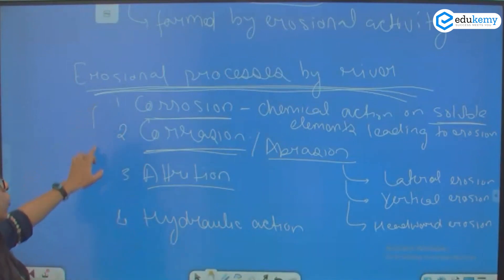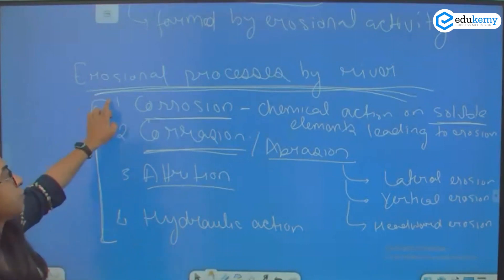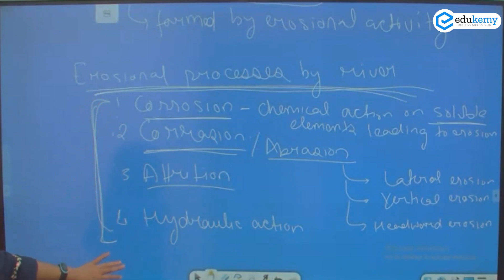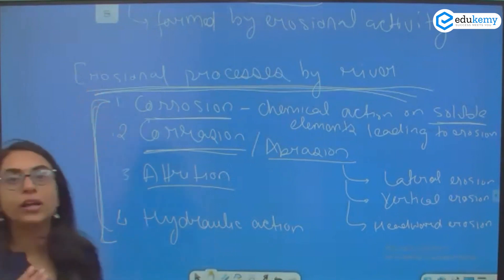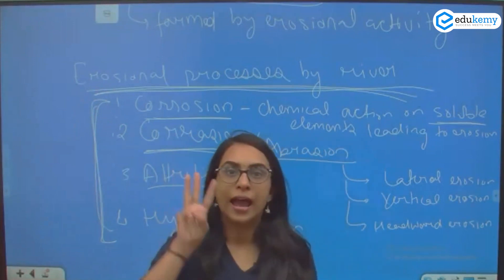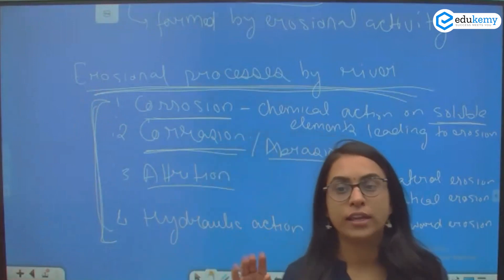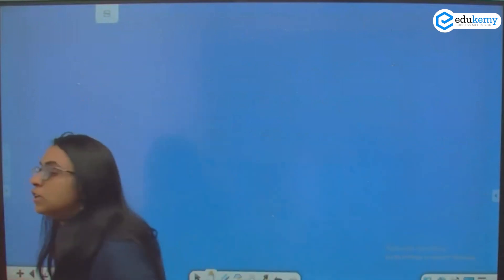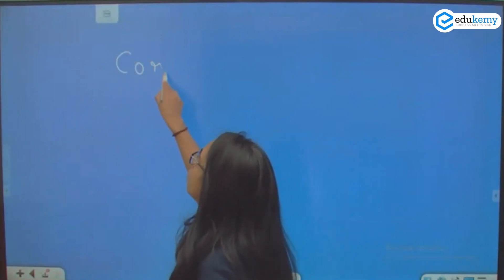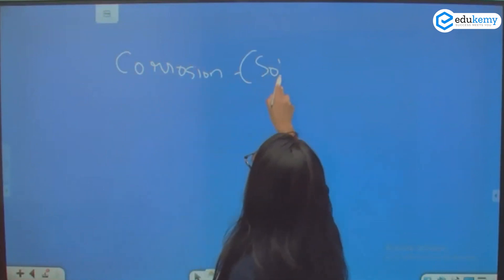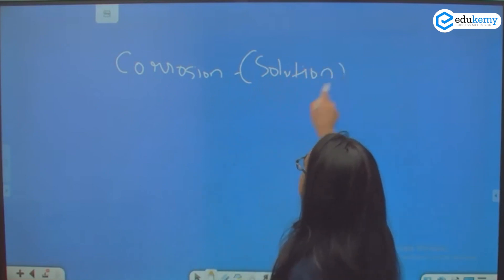These are the erosional processes by the river. We will see each one of them now. The four erosional processes by the river are corrosion, corrasion, attrition, and hydraulic action. Corrosion is nothing but solution — remember, corrosion by solution.